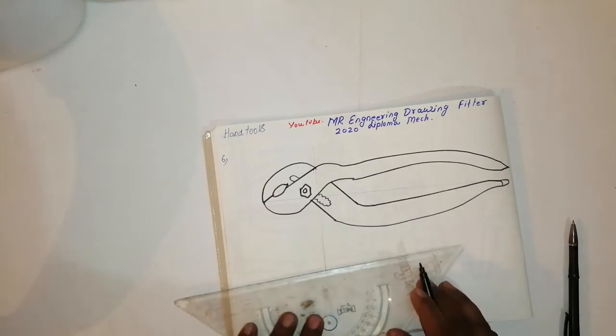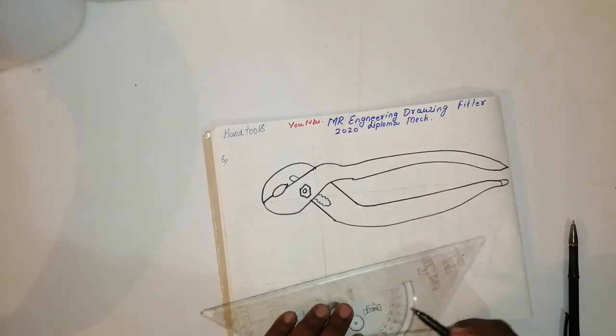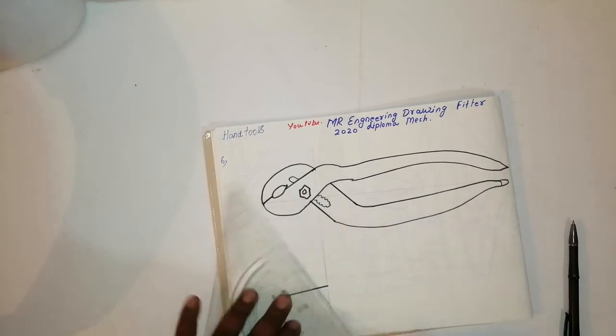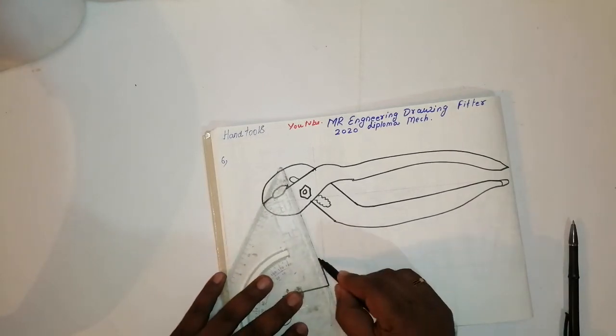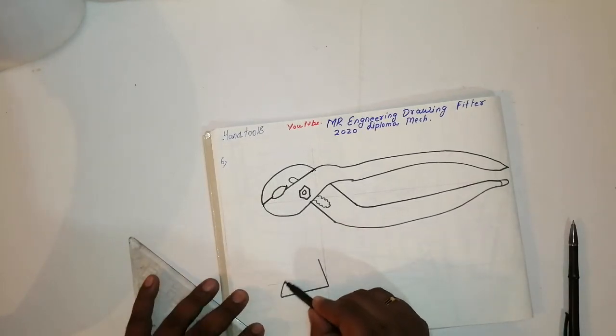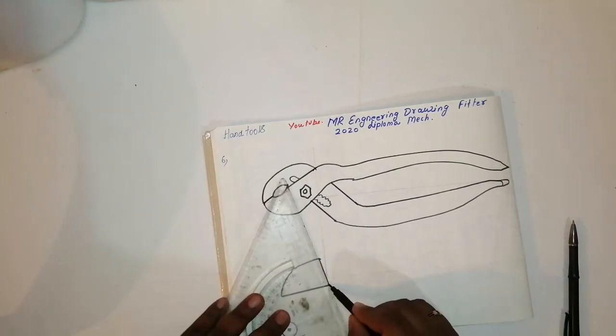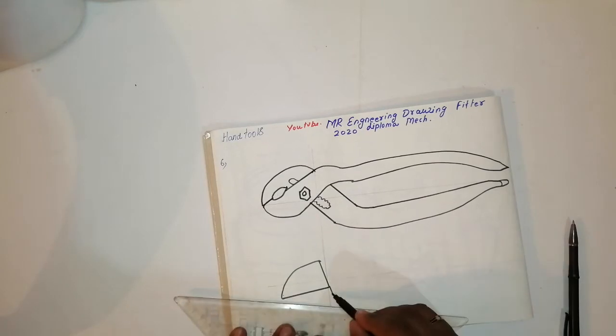Then the axis I have taken like this. It will be like this. Then join this line like this, then draw one curve. After that, take a straight line like this.